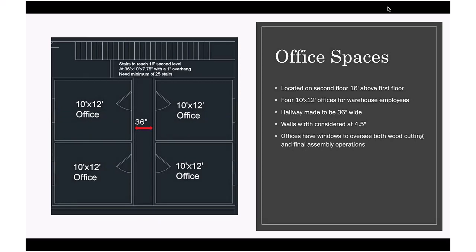The office spaces that were shown in the previous slide, here's a closer look. They're just 10 feet by 12 feet offices with 36-inch hallways. You can always add another set of stairs going in on that south end. But again, I wanted to highlight these have windows looking over to each section of the warehouse operations, the wood cutting storage, and the final assembly.